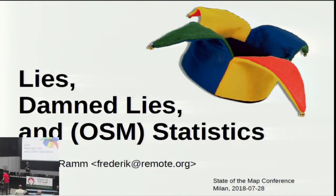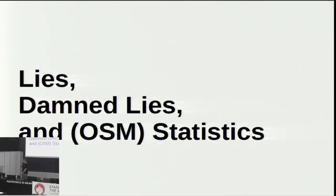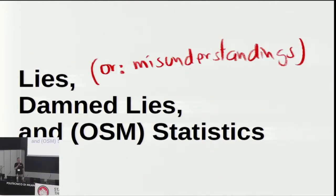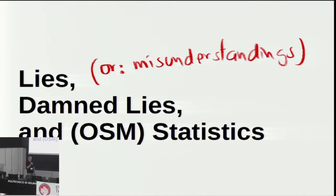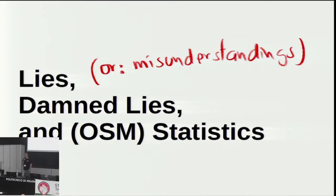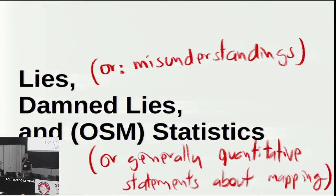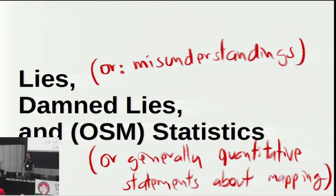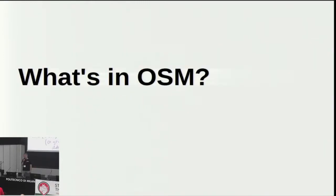Hello everyone. I'm going to talk about statistics and lies — maybe not so much lies, because a lie is always something with a bad intention. Let's say sometimes they're just misunderstandings, and also statistics is a very scientific term. Maybe sometimes it's just generally quantitative statements about mapping. I'm going to show some techniques about how to best count things and then show some examples.